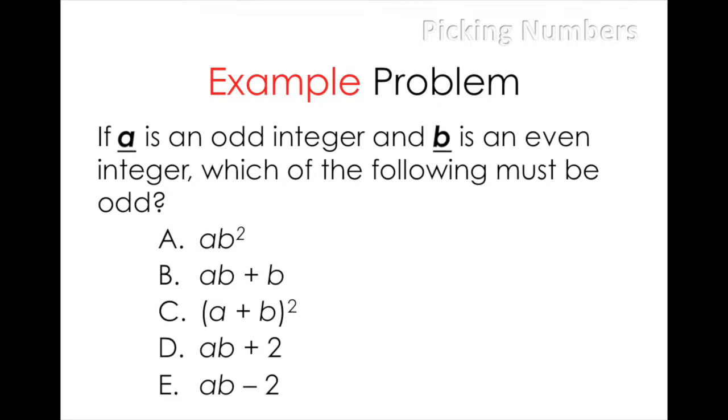As you can see, there are two variables in the problem, A and B, and they appear in both the question and the answer choices. This is a perfect picking numbers problem.